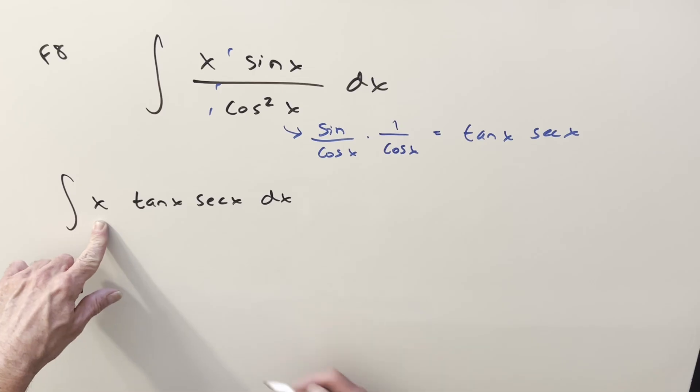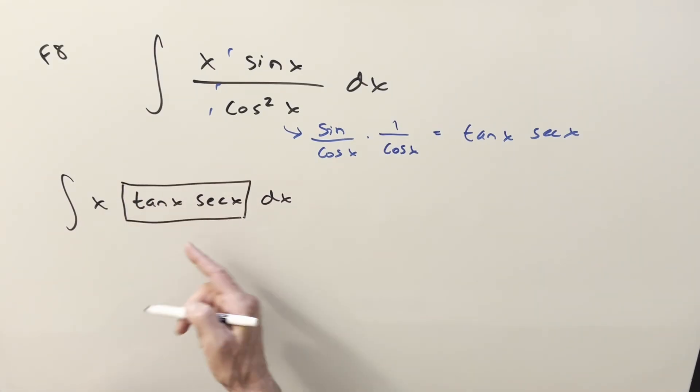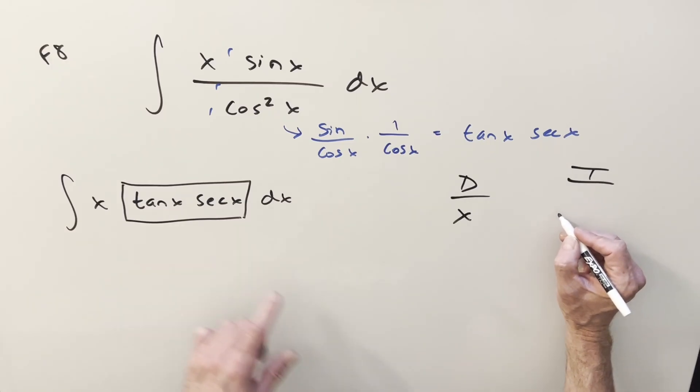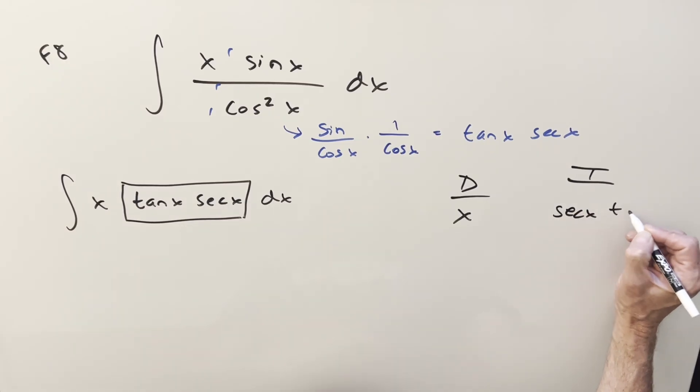So that's good to differentiate, and this right here is good to integrate because the integral of that is just going to be secant x. So we'll do integration by parts with the DI method over here, differentiating x, integrating this thing. I usually like to do it the other way, secant tangent.